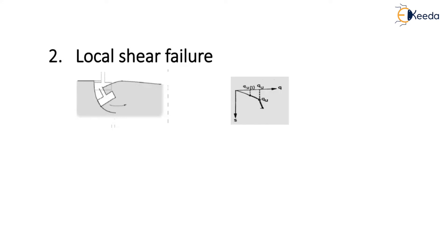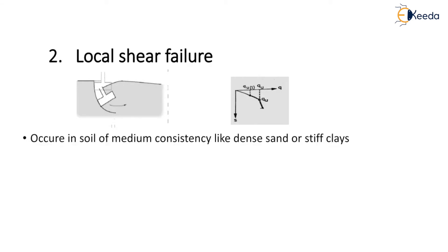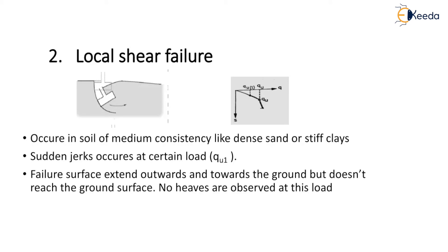The second type of failure is local shear failure. The first figure indicates the local shear failure of a strip footing, and the second figure indicates the load settlement curve for the failure. Local shear failure occurs in soil of medium consistency. Sudden jerks are observed at a certain load QU1, and at this point the soil is supposed to have failed. However, the failure surface extends towards the ground and outwards, but it doesn't reach the ground surface and no heaves are observed at this load.